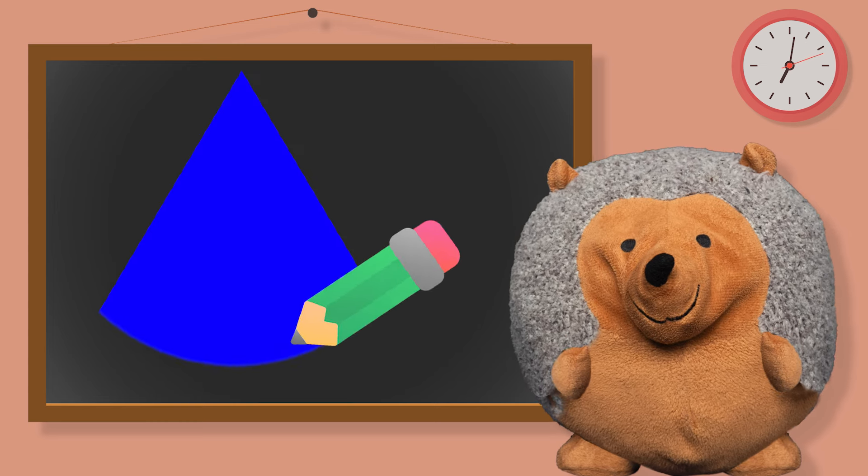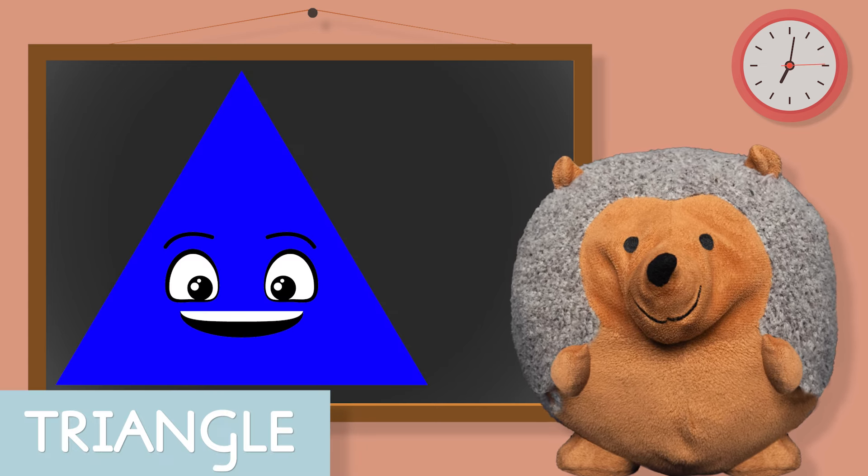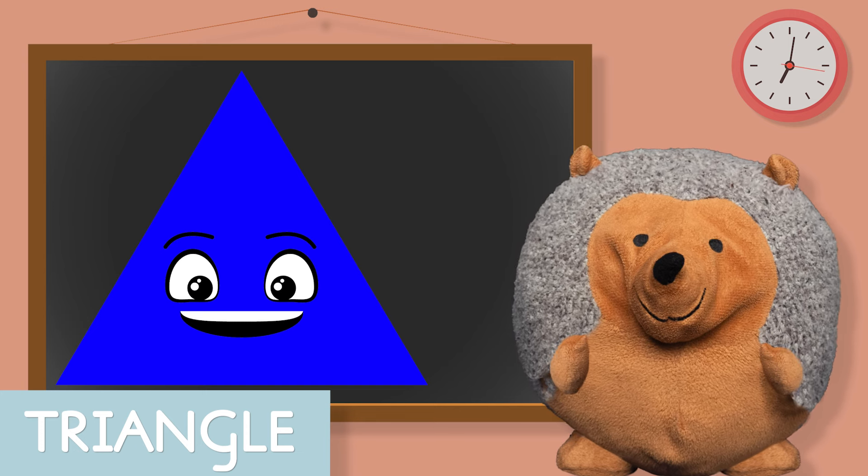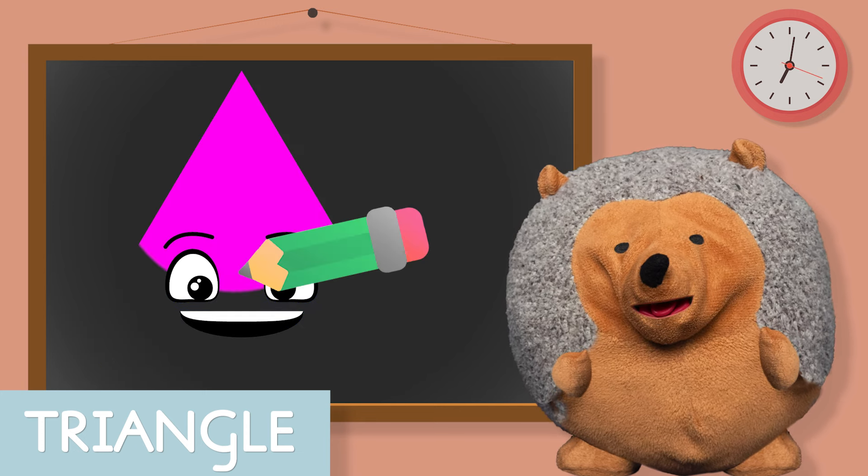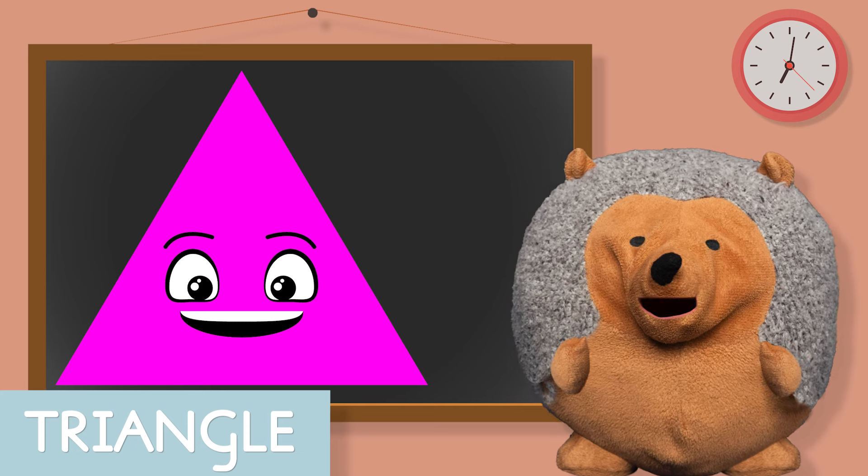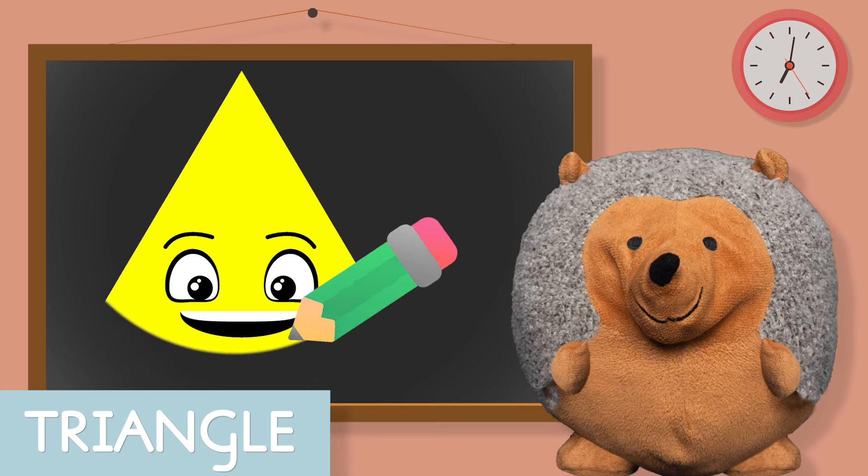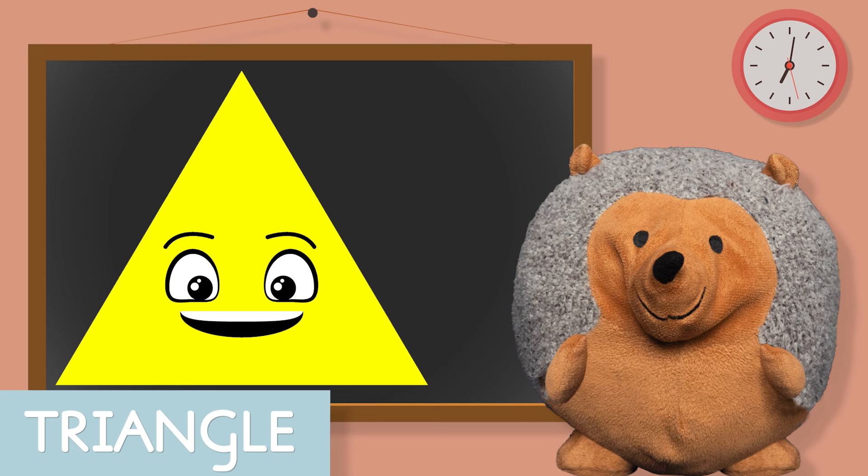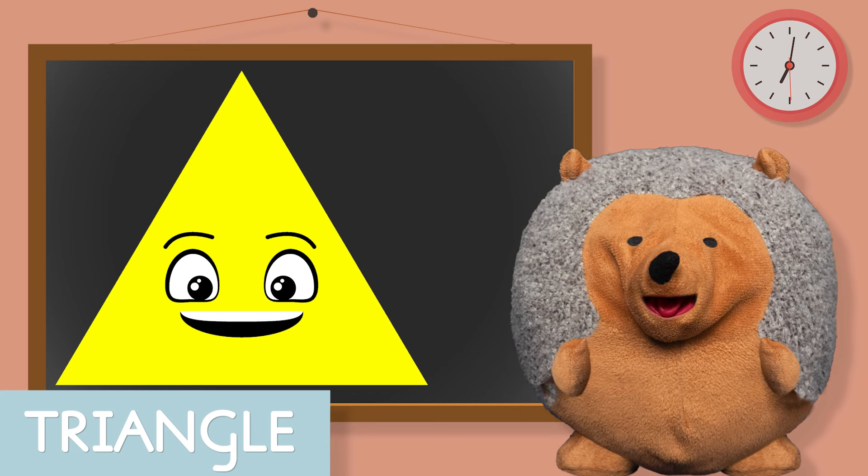Now we have a blue triangle. And this one is a pink triangle. And now a yellow triangle. So now you know what a triangle looks like.